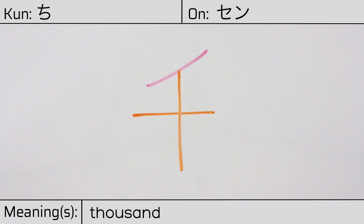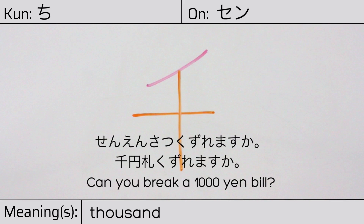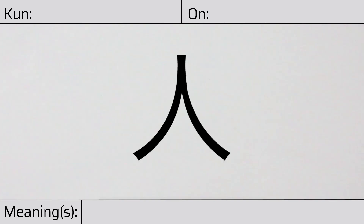Our example sentence is 千円札崩れますか? Can you break a thousand yen bill?